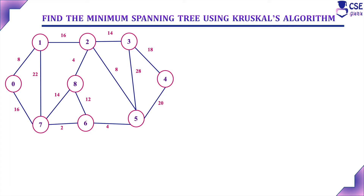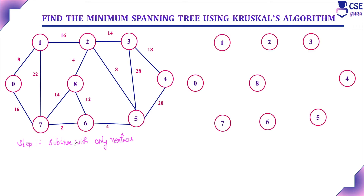Finally we will get a connected acyclic subgraph — that is the spanning tree. Adding the cost of its edges gives the minimum spanning tree cost. This is the procedure to implement Kruskal's algorithm. Step 1: initially consider only the vertices without the edges of the given graph — a subgraph with only the vertices.